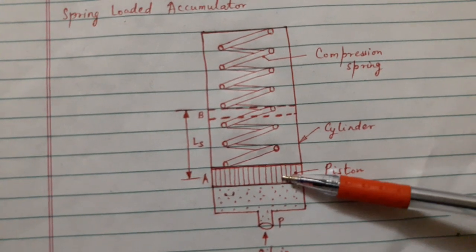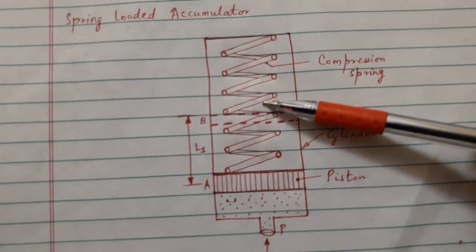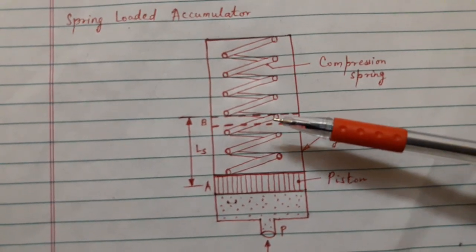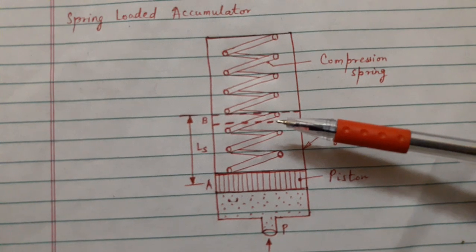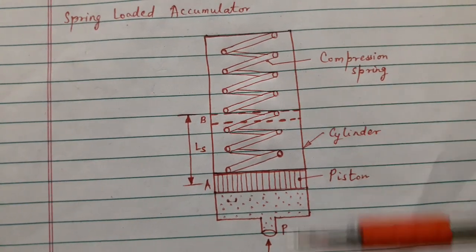The oil forces the piston upwards causing the spring to compress. The top dead position of the piston will be decided by the full compression length of the spring.